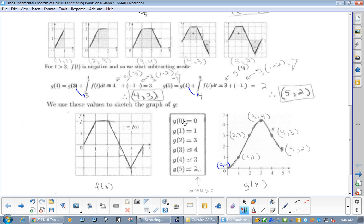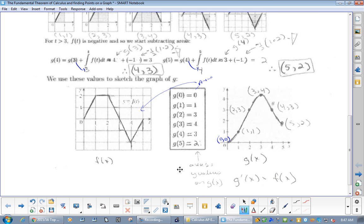So, g(0) is 0. g(1)... Now, remember, these are all areas in here. g(1) is 1. g(2), area is 3. g(3), the area is 4. g(4), the area is 3 because 4 minus 1. And then, g(5)... What's the area? Well, it is 3... Sorry... This entire area is 1, 2, 3, 4. 4 minus 2 is 2. So, again, I've reiterated.